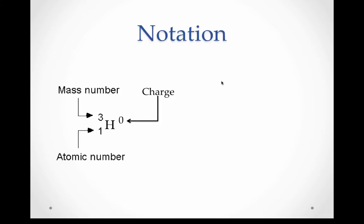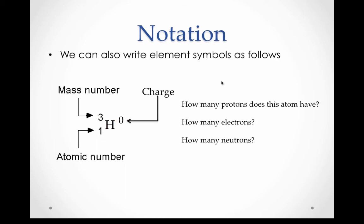We can use a special notation to determine which isotope we're working with and whether or not that isotope is also an ion. We have a superscript of the mass number on the left-hand side and a subscript of the atomic number on the left-hand side. A superscript on the right-hand side indicates the charge. If nothing is written there, you can assume the charge is zero. This tells us: because our atomic number is one, we have one proton. Since the charge is zero, we must have one electron. And since it has a mass number of three, we subtract the atomic number to get two neutrons.